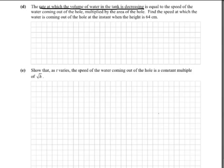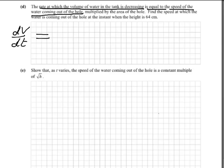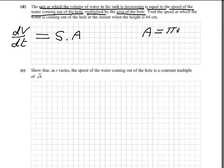Again, converting English to maths: we know the rate is dV/dt, which we have from the last part. The next part to decipher is: rate equals speed of water coming out of the hole — which we call s for speed — multiplied by the area of the hole, which we call A. Notice how we've cut down that whole word sentence in part D to one simple equation.